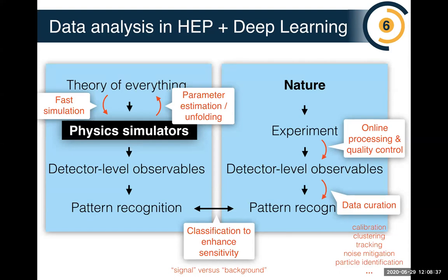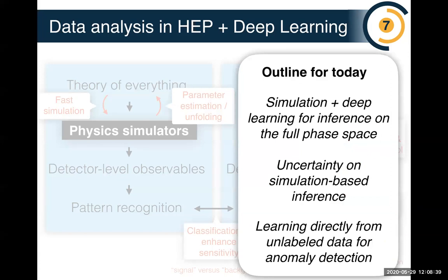I don't have time to talk about all of this, so today I'll focus on a few aspects. I'll start with simulation and deep learning for inference in the full phase space, which is empowered by combining deep learning with slow simulators. I'll then pivot briefly to discuss uncertainties before getting into label-free learning, where the example will be anomaly detection.